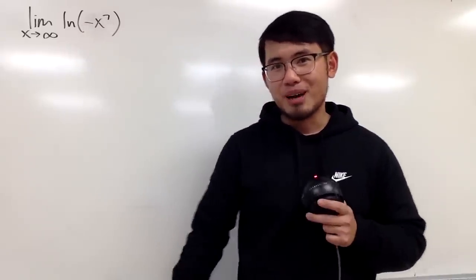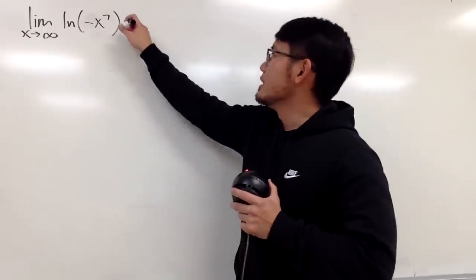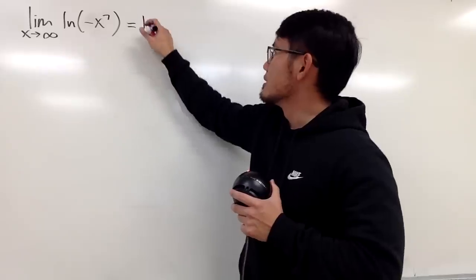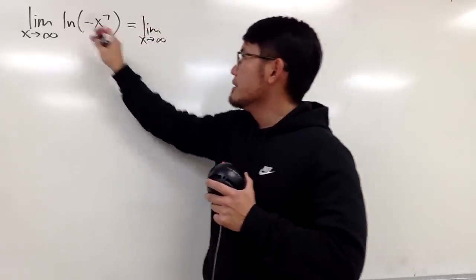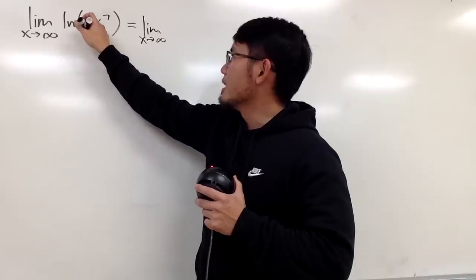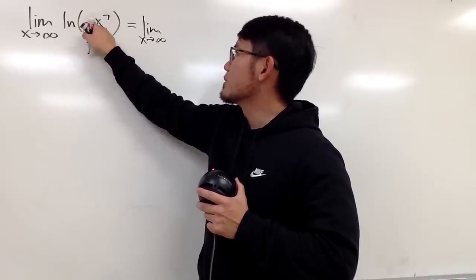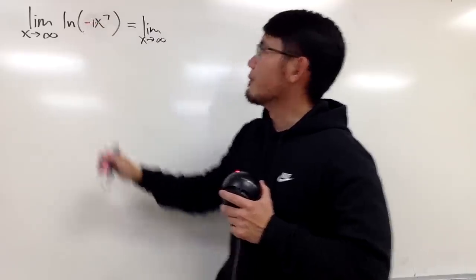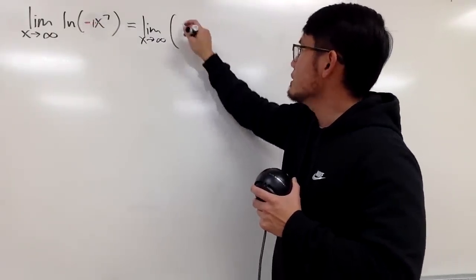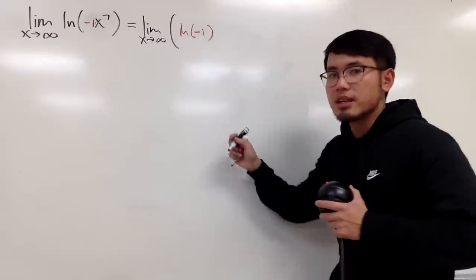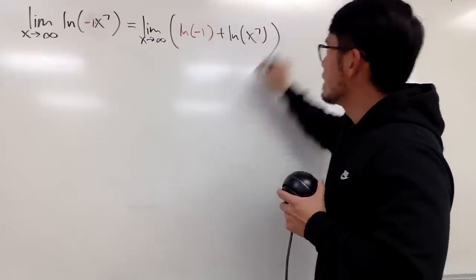That means we have to go to the complex world to talk about this. So let's see how this works out. Let's take the limit as x goes to positive infinity. Inside the natural log we have negative x to the seventh power, which is the same as negative 1 times x to the seventh power. I'm going to break that into two ln's: the first one is ln of negative 1, and then we add ln of x to the seventh power.